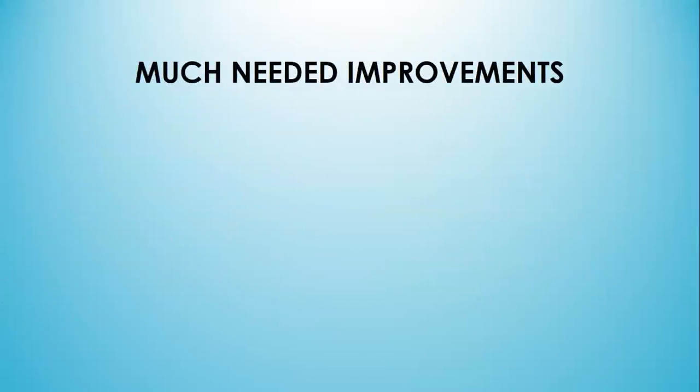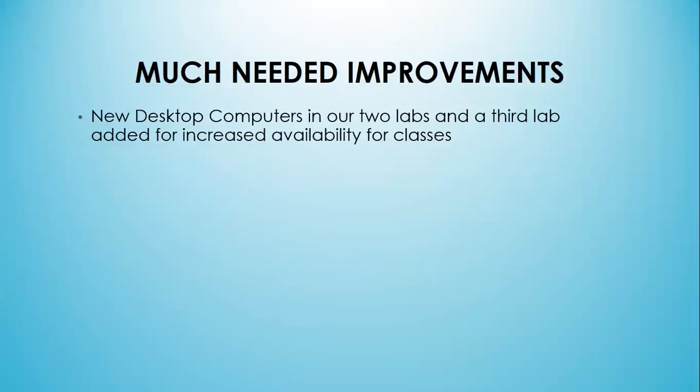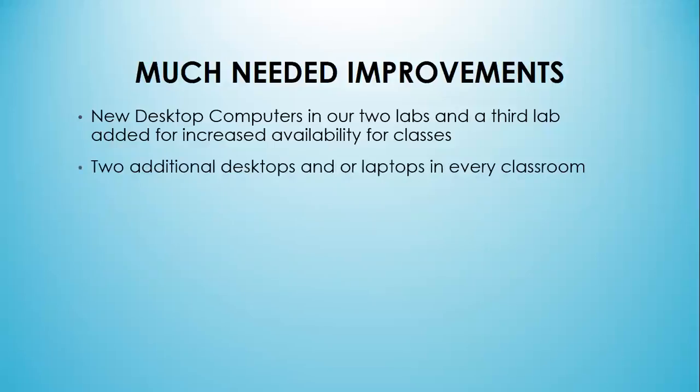Things we need to do at Boylan: we need to update desktop computers in our two main computer labs. We have several labs — some are specific to certain classes like business, Photoshop, graphic design, and a robotics development lab. But our two main computer labs that teachers can reserve are really old, and we need to replace those and add a third lab for increased availability.